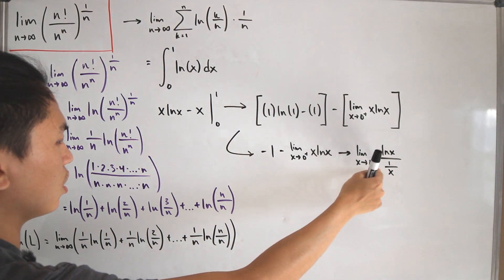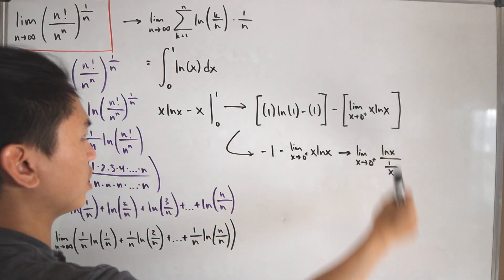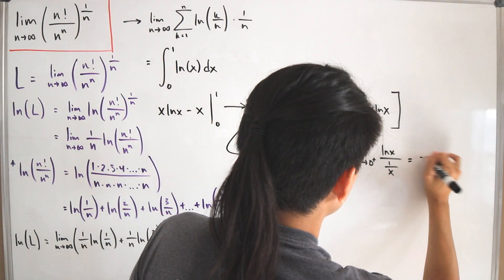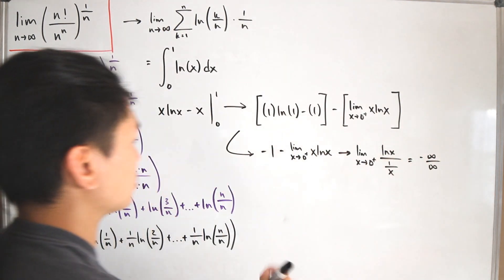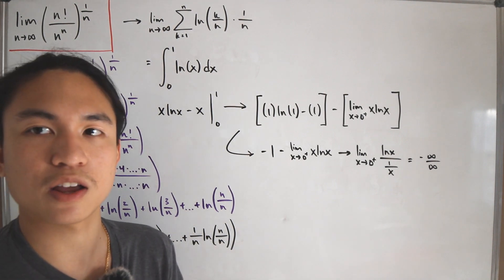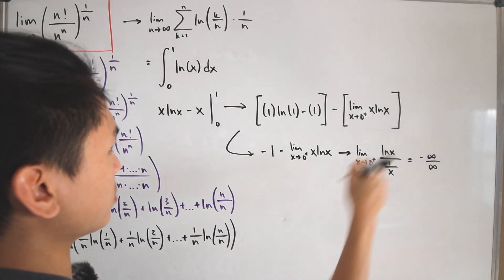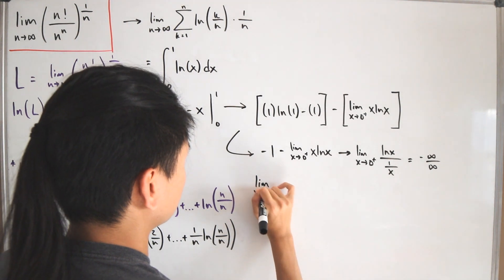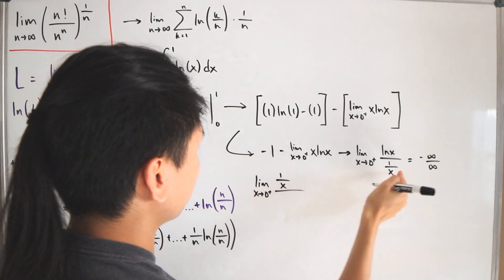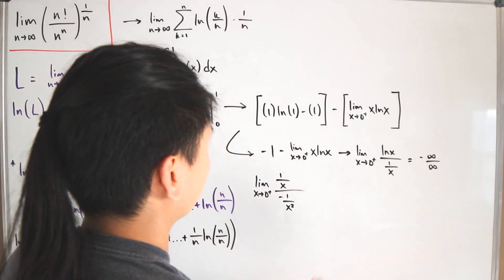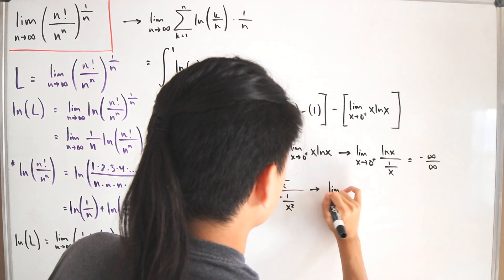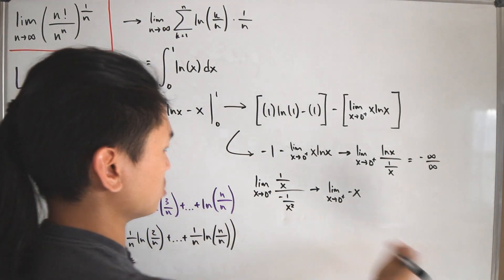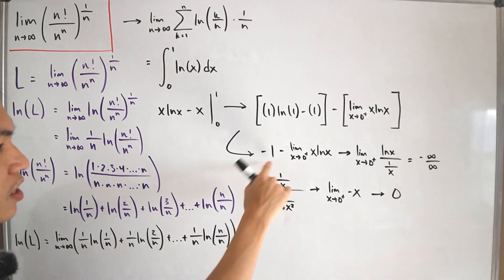Disregarding the negative, we have an indeterminate form of infinity over infinity, so we can apply L'Hôpital's rule and take the derivative of both numerator and denominator. The derivative of the top is 1/x, and the denominator becomes negative 1 over x squared. Simplifying gives the limit as x approaches 0 plus of negative x, which approaches 0. So the limit of x times ln(x) as x approaches 0 plus is indeed 0.